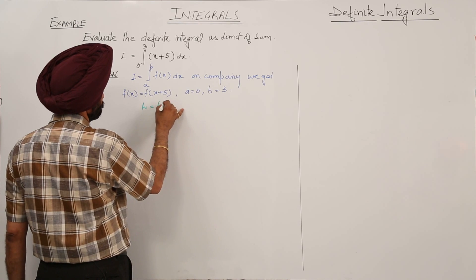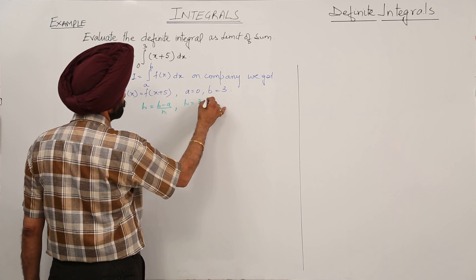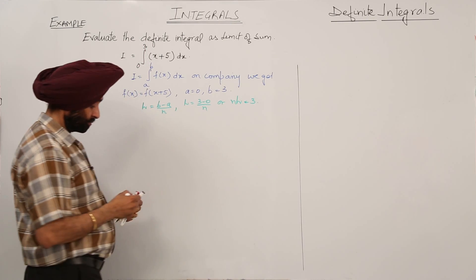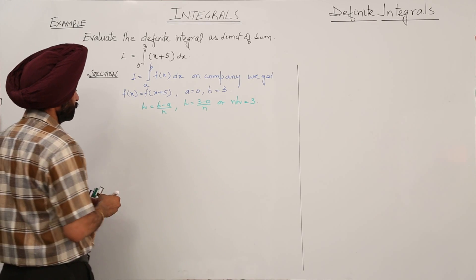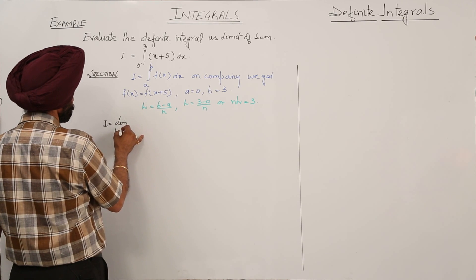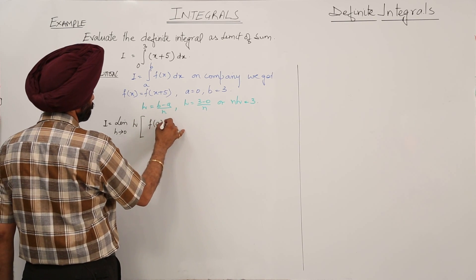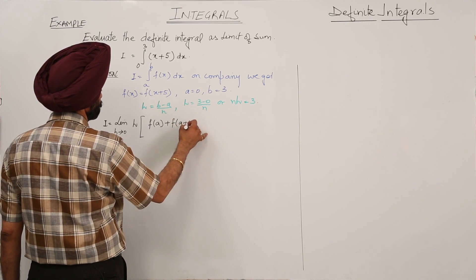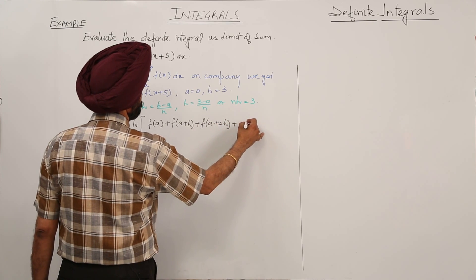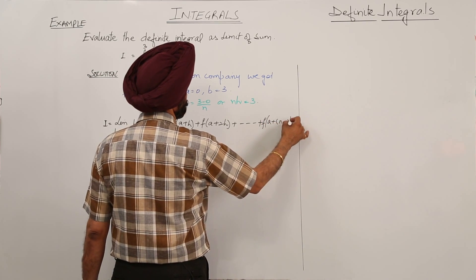h is equal to b minus a upon n. h is equal to 3 minus 0 over n, or nh is equal to 3. Now writing the theorem: limit as h approaches to 0, of h times [f(a) plus f(a+h) plus f(a+2h) plus ... plus f(a + (n minus 1)h)].